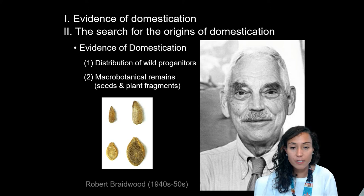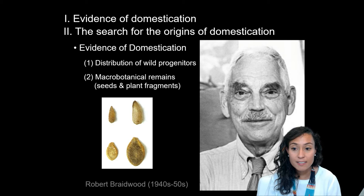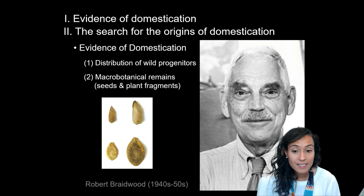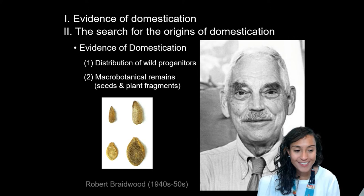Another line of evidence is macro-botanical remains — basically the remains of seeds and plant fragments. A pioneer in this regard was Robert Braidwood, who identified seed samples at the Jarmo site in Iraq in 1947. These seeds were radiocarbon dated to before 6000 B.C. Based on this interdisciplinary evidence, Braidwood argued that domestication must have arisen in the natural habitats of wild ancestors, a conclusion very similar to Vavilov's.